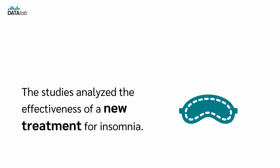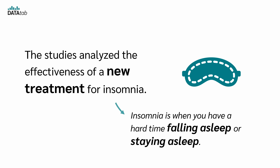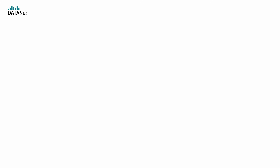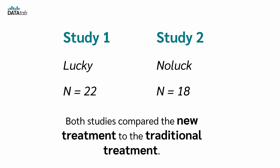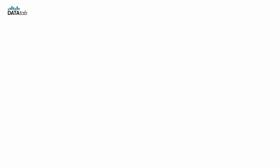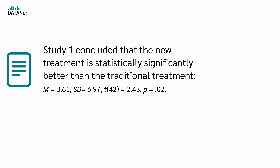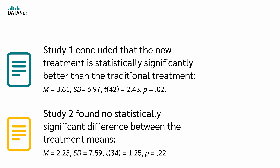Let's bring everything together with an example from "Understanding the New Statistics," also written by Jeff Cumming. Imagine a journal article presenting the results of two studies analyzing the effectiveness of a new treatment for insomnia — when you have a hard time falling or staying asleep. Study 1 is "the lucky study" and Study 2 is "the no luck study." Both studies compared the new treatment to the traditional treatment. In the null hypothesis testing presentation, Study 1 concluded that the new treatment is statistically significantly better than the traditional treatment, while Study 2 found no statistically significant difference between the treatment means.